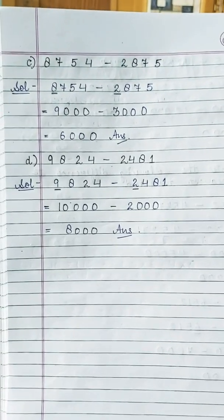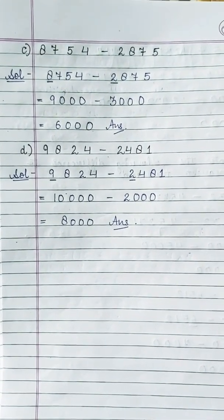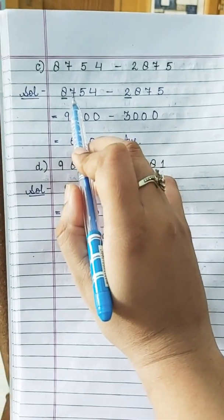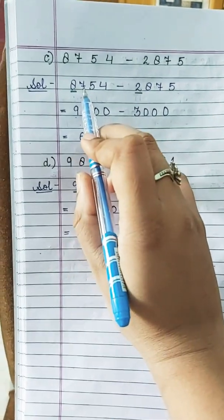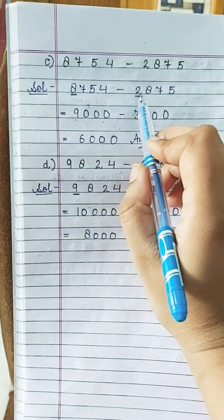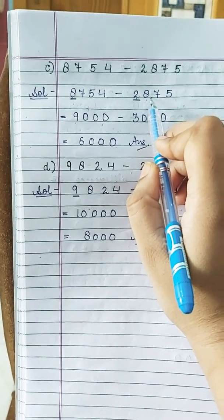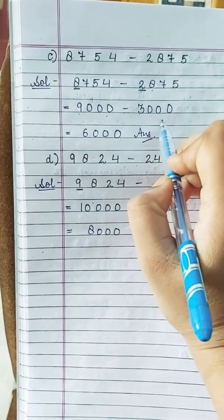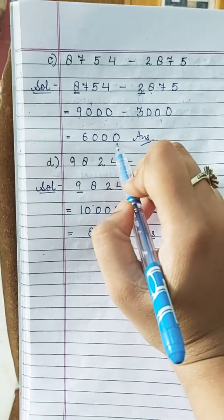Part C is 8754 minus 2875. Underline the digits at thousands place. For 8754, observe 7 — greater than 5 — so 8 is increased by 1 to become 9, and 754 is replaced by 0, giving 9000. For 2875, observe 8 — greater than 5 — so 2 is increased by 1 to become 3, and the rest is replaced by 0, giving 3000. So 9000 minus 3000; the answer is 6,000.